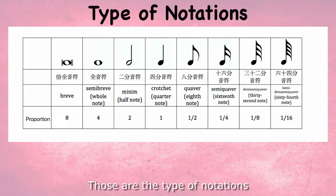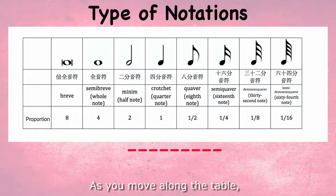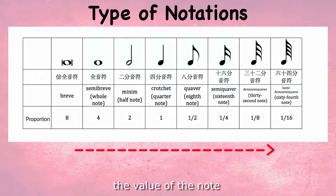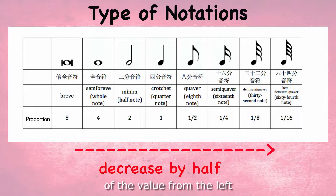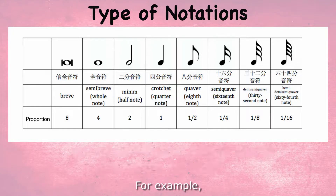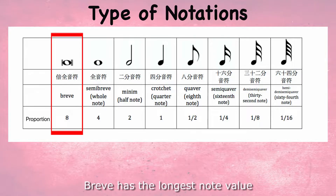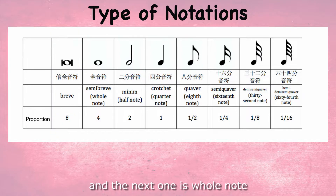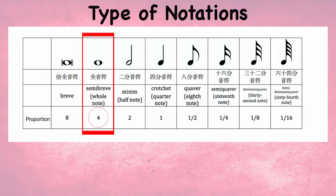Those are the types of notations you will see in school. As you move along the table, the value of the note decreases by half from the left. For example, the breve has the longest note value — 8 beats. The next one is the whole note, 4 beats, which is half of 8.